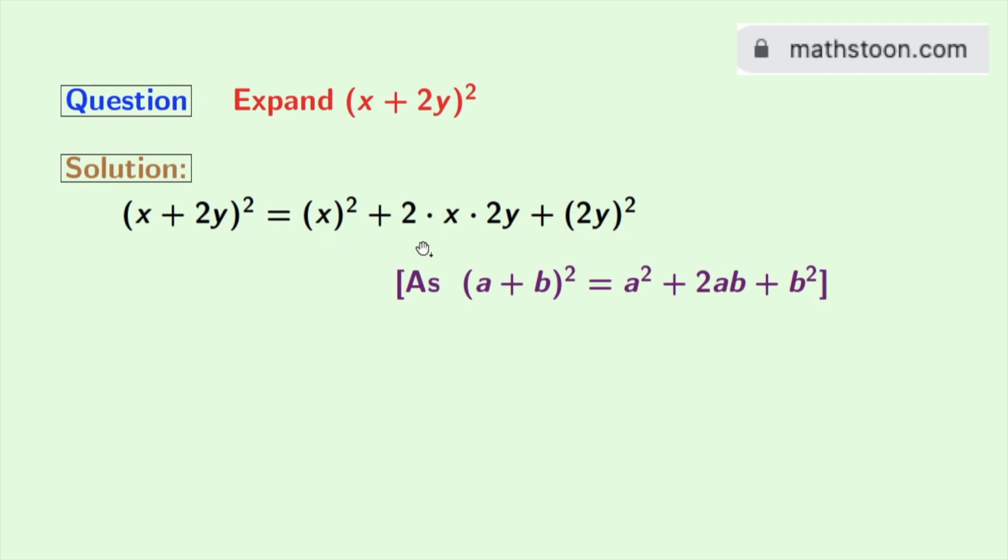Now simplifying this, we will get x square plus 2 times x times 2y is equal to 4xy and 2y whole square is equal to 4y square.